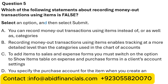Question 5. Which of the following statements about recording money out transactions using items is false? You can record money out transactions using items instead of, or as well as, categories. Recording money out transactions using items enables tracking at a more detailed level. To add items to sales and expense forms, you must switch on the option to show the items table on the expense and purchase forms. You specify the purchase account for an item when you create an expense or bill. The correct answer is Option D: you specify the purchase account for an item when you create an expense or bill.